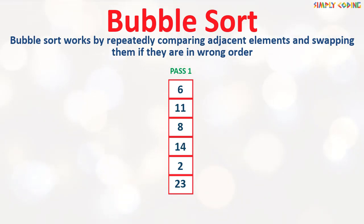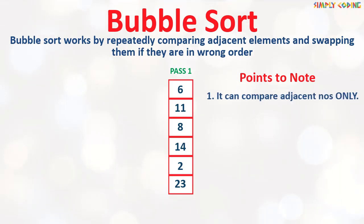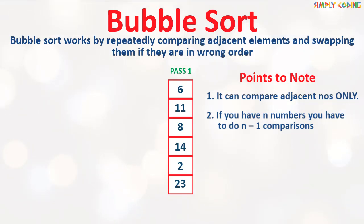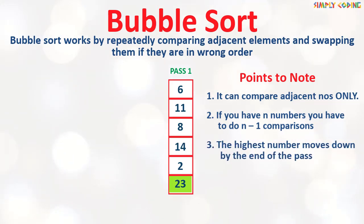Some key points to note: bubble sort can compare and swap adjacent numbers only. Second, if you have 6 elements to compare you actually need to do only 5 comparisons — you compare the second last number with the last and do not compare the last number with anything. So if you have n numbers you need to do n-1 comparisons. Third, when we finish a pass the heaviest element moves down to the last or correct position, so for the next pass you can ignore it.